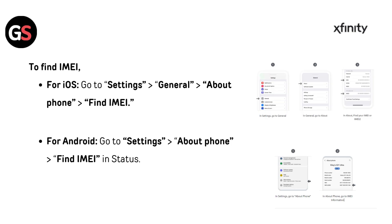To find the IMEI on iOS, go to Settings, then General, then About. To find the IMEI on Android, go to Settings, then About Phone, and find the IMEI in Status.